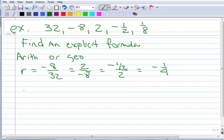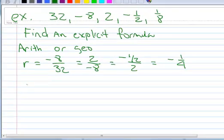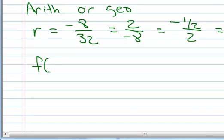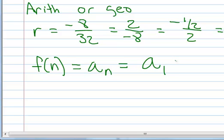So our formula for geometric sequence, and we're going to write it in function notation, or we could write it like we did the other one, a sub n. So that's going to be a sub 1 times r to the n minus 1. Well, we just calculated r, a sub 1 is the first term, so I see that my first term is 32. So I can go ahead and make my formula.